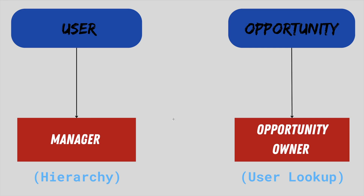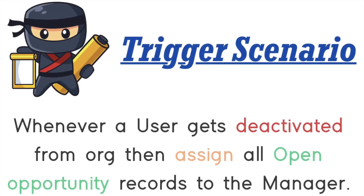Now let's get back to the data model. The second object we are going to use today is opportunity. On the opportunity object, we have a user lookup field called opportunity owner. Whenever a user gets reactivated, we need to assign all open opportunity records to his or her manager.